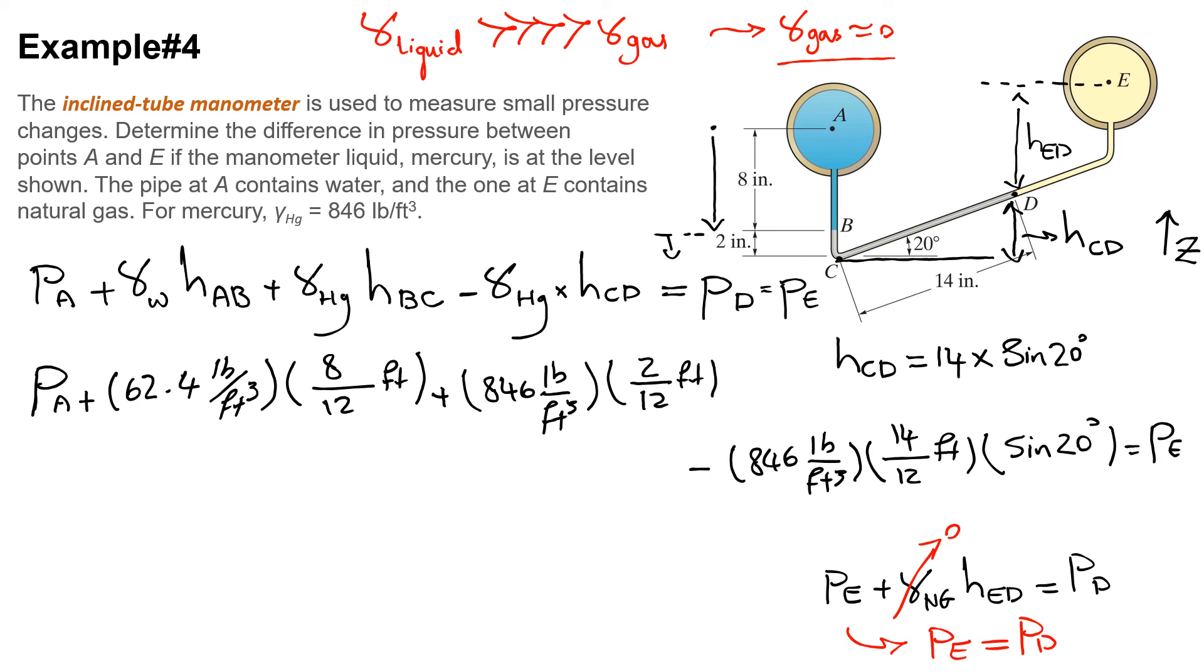If you calculate that, it will result in the difference between pressure PA minus PE of 155 pounds per foot squared, and that is your final answer. So in this time it's obvious that PA is larger than PE because the sign of that is positive.